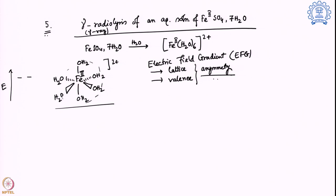In an octahedral system, the d orbitals split into E_g and T₂g symmetry. The ligands can be classified as sigma donor, pi donor, or sigma donor/pi acceptor. Depending on this, the energy gap delta-octahedral (crystal field splitting energy) varies. Here, oxygen (group 16) is a sigma donor and pi donor, ensuring a relatively low E_g–T₂g gap, which means the system prefers a high-spin configuration.